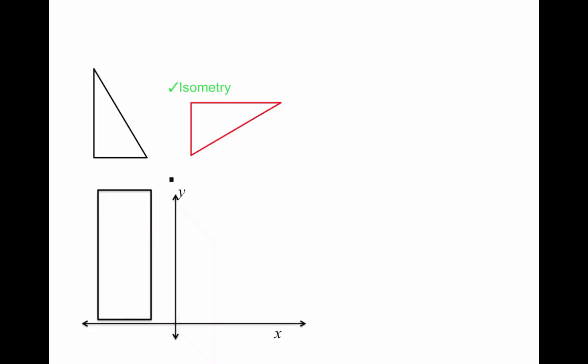Here's a reflection across the y-axis. You can see that the preimage and the image are exactly the same shape and size, but just in a different location. So that also is an isometry.